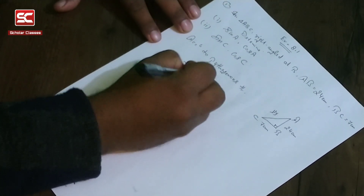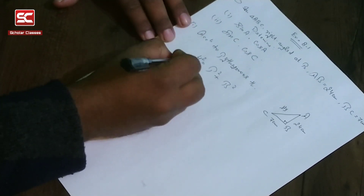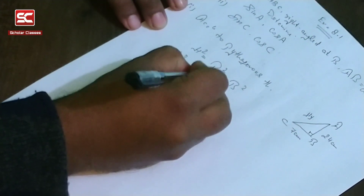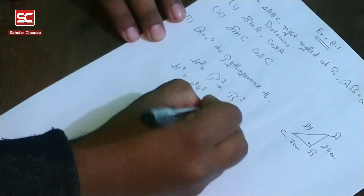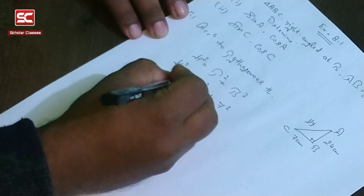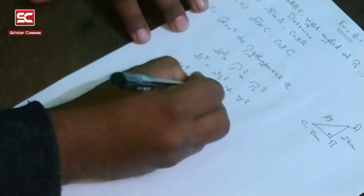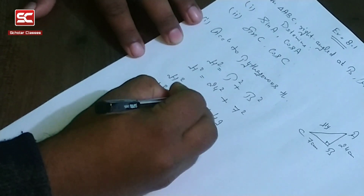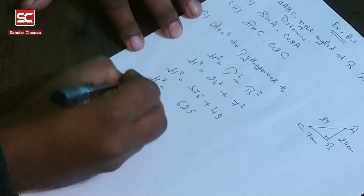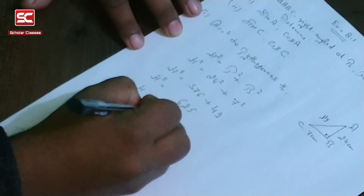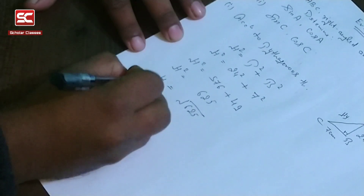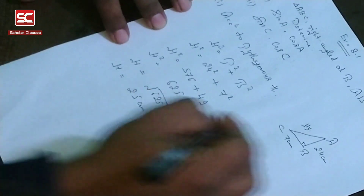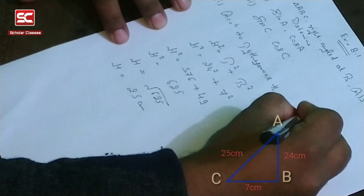According to the Pythagorean theorem: hypotenuse squared is equal to perpendicular squared plus base squared. So hypotenuse squared equals 24 squared plus 7 squared, which is 576 plus 49, equal to 625. Therefore, hypotenuse equals the square root of 625, which is 25. So AC is equal to 25 centimeters.